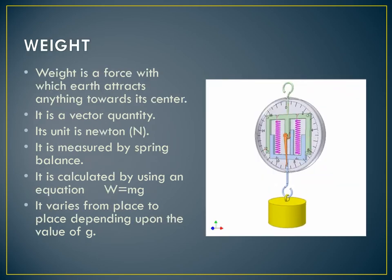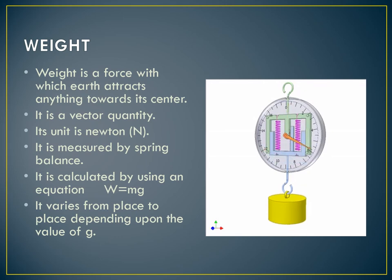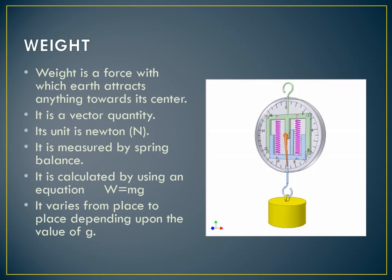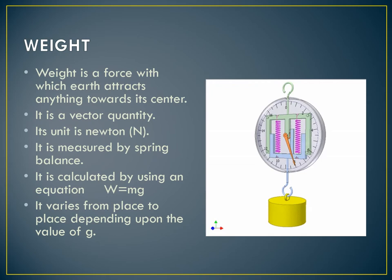On the other hand, weight by definition is the force with which the Earth attracts anything towards its center. Weight is a vector quantity and also a derived quantity. The unit of weight is Newton, because weight is a force. Weight is measured by a spring balance — when the weight is hung, the pointer moves on the scale and shows the weight. Weight is calculated using the equation W = mg. Weight varies from place to place depending upon the value of g, which depends on the distance from the center of the Earth. As we go above the surface of the Earth, the weight decreases because the value of g also decreases.